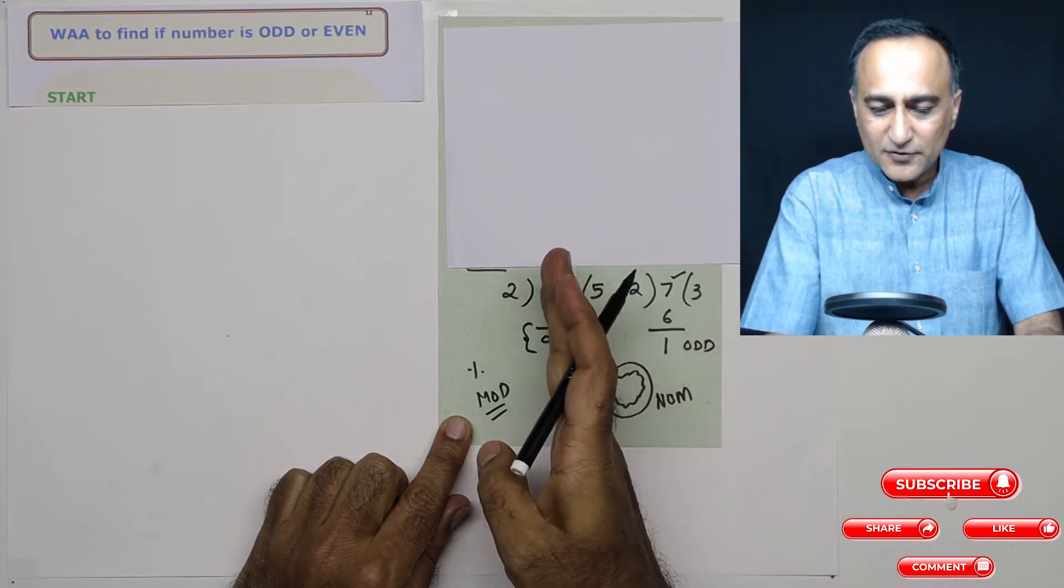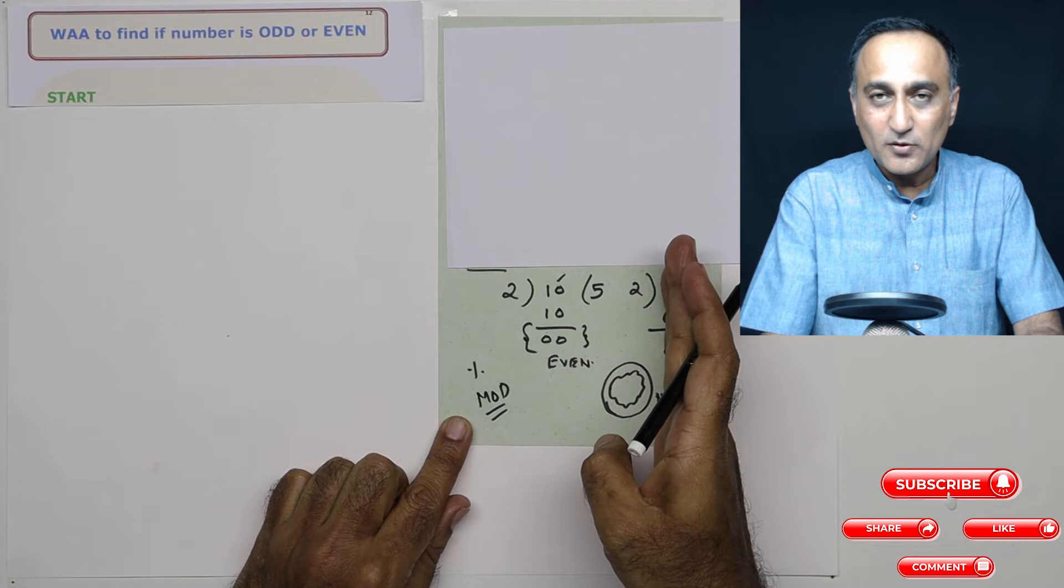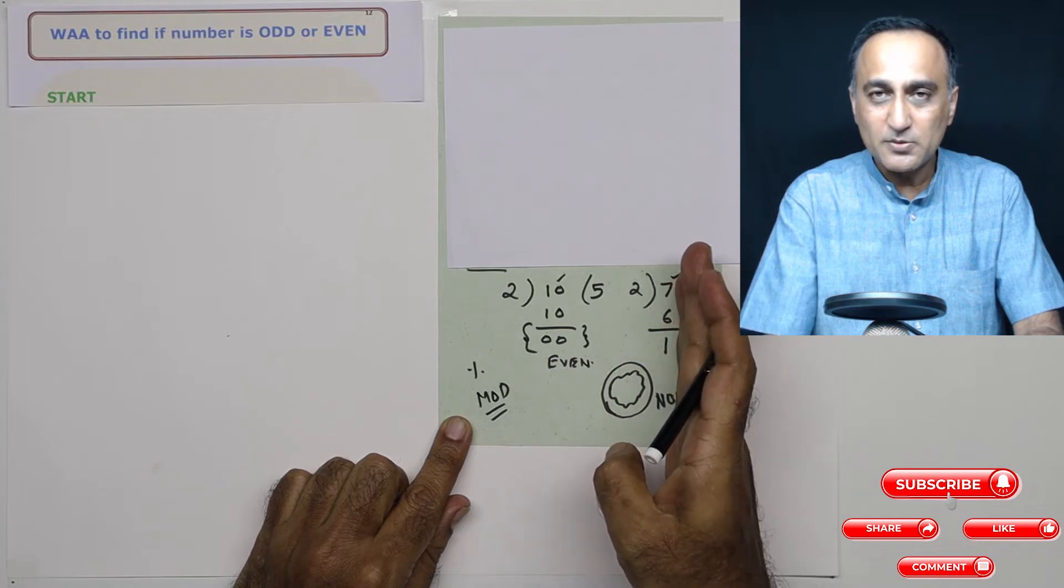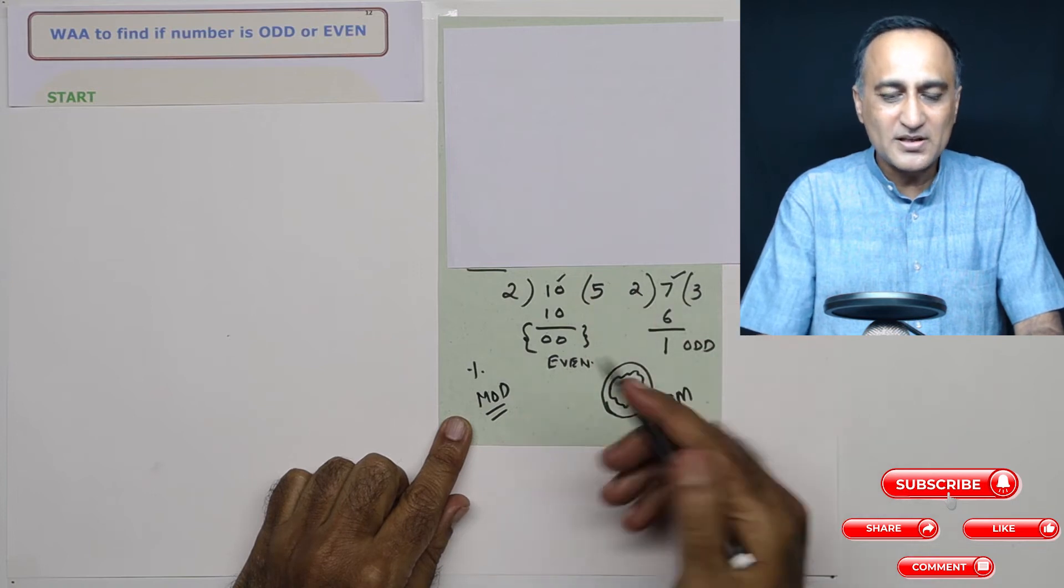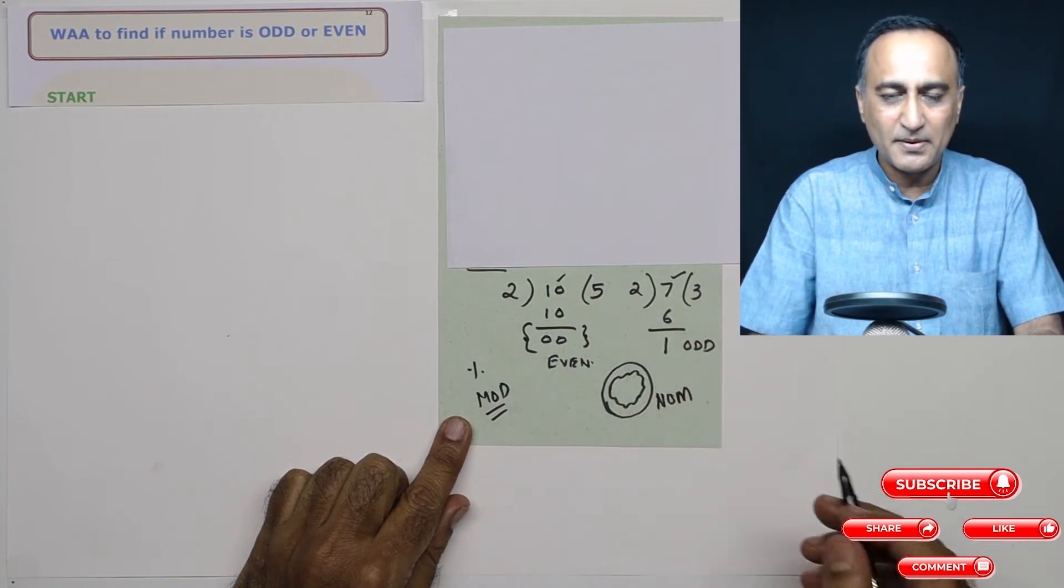So multiples of two are even, not sorry, numbers which are not multiples of two are odd. So the best way to know whether a number is odd or even is by using the mod operation, which gives the remainder.